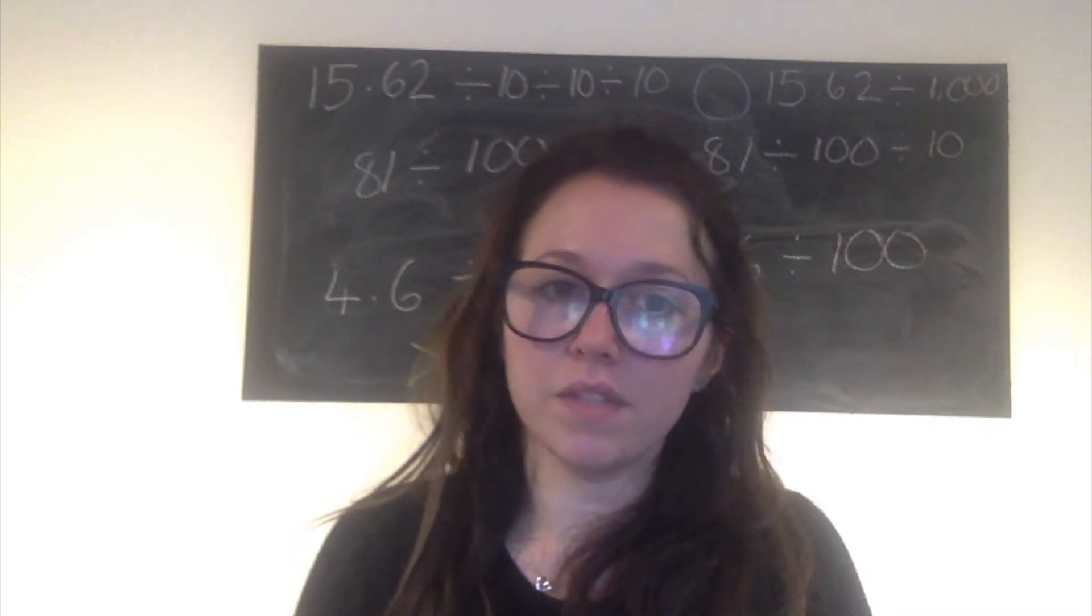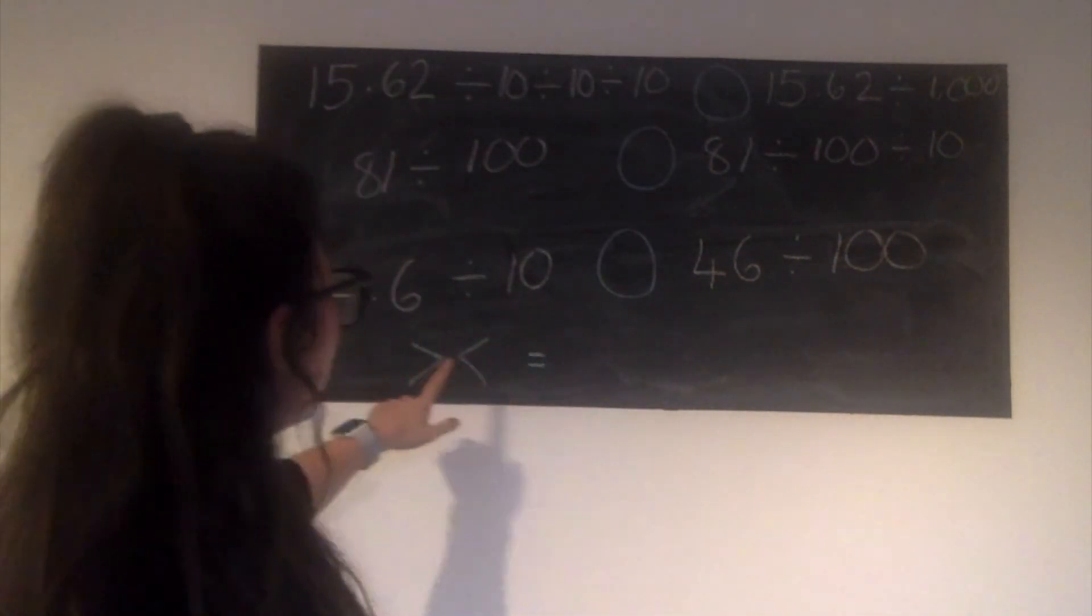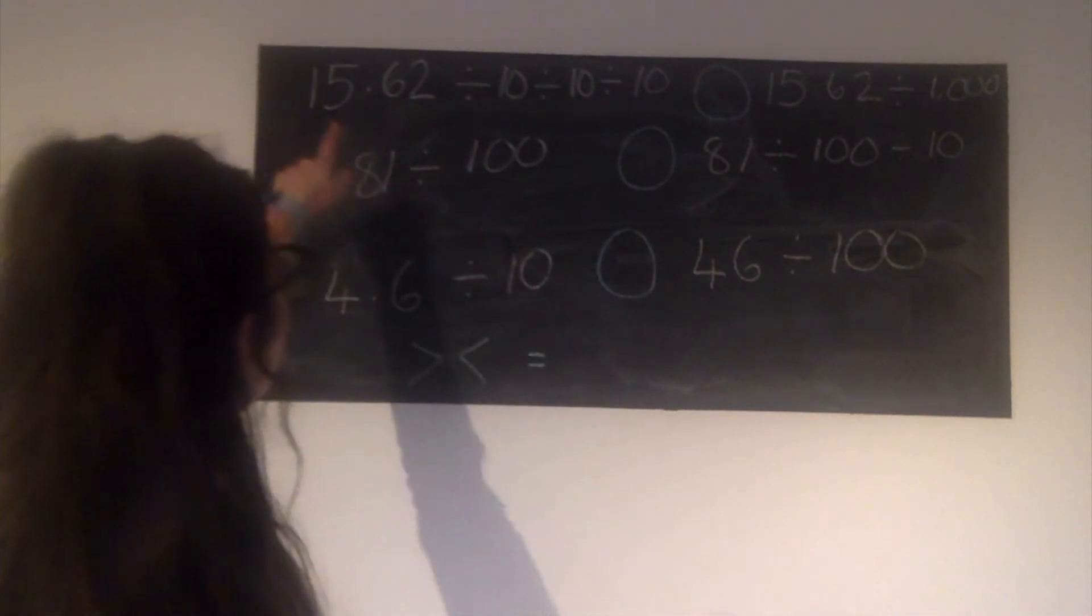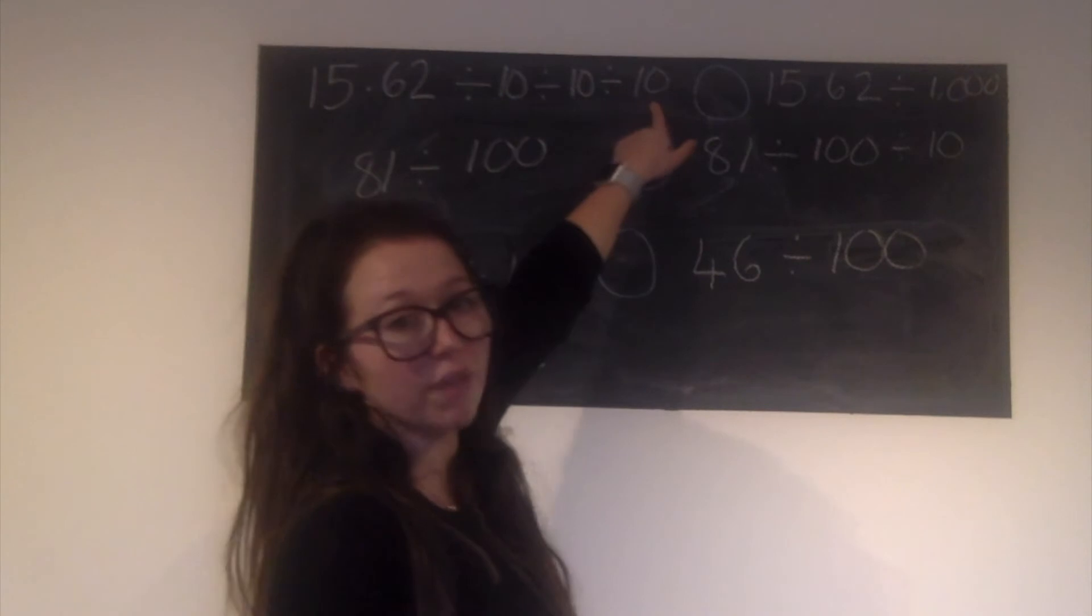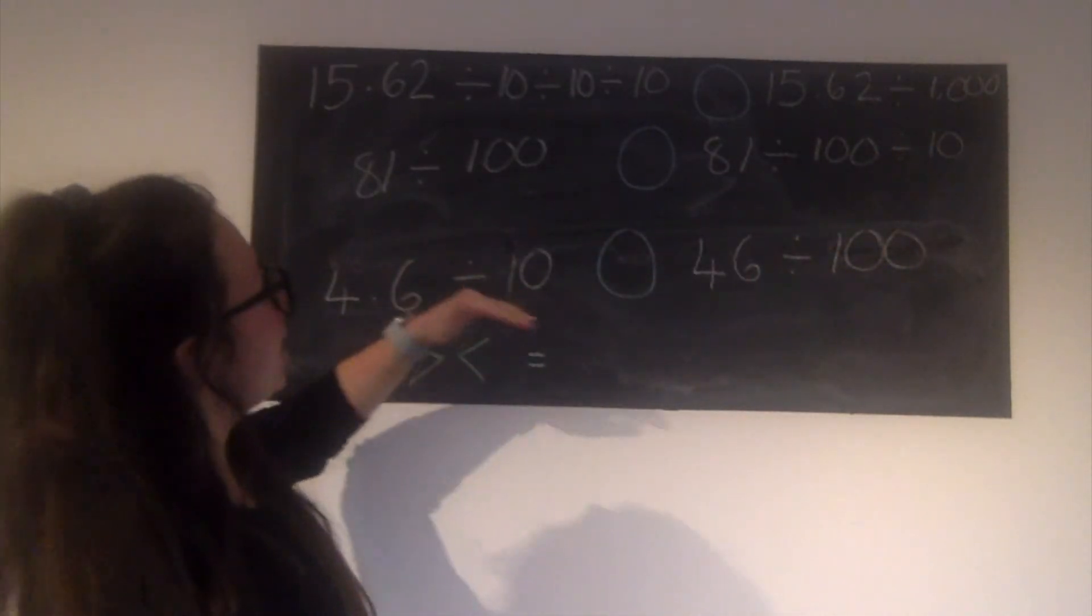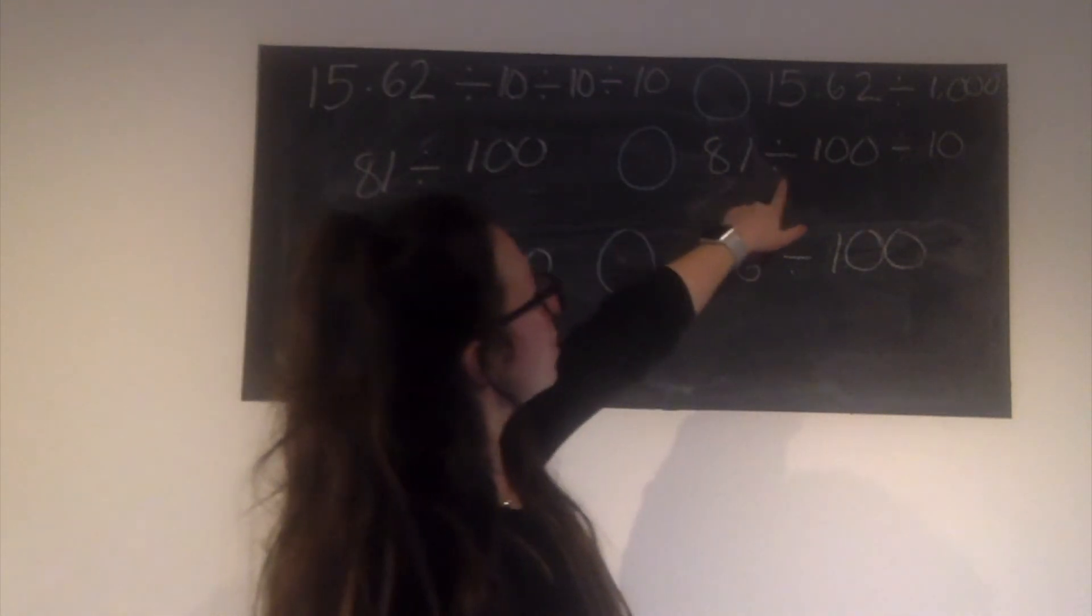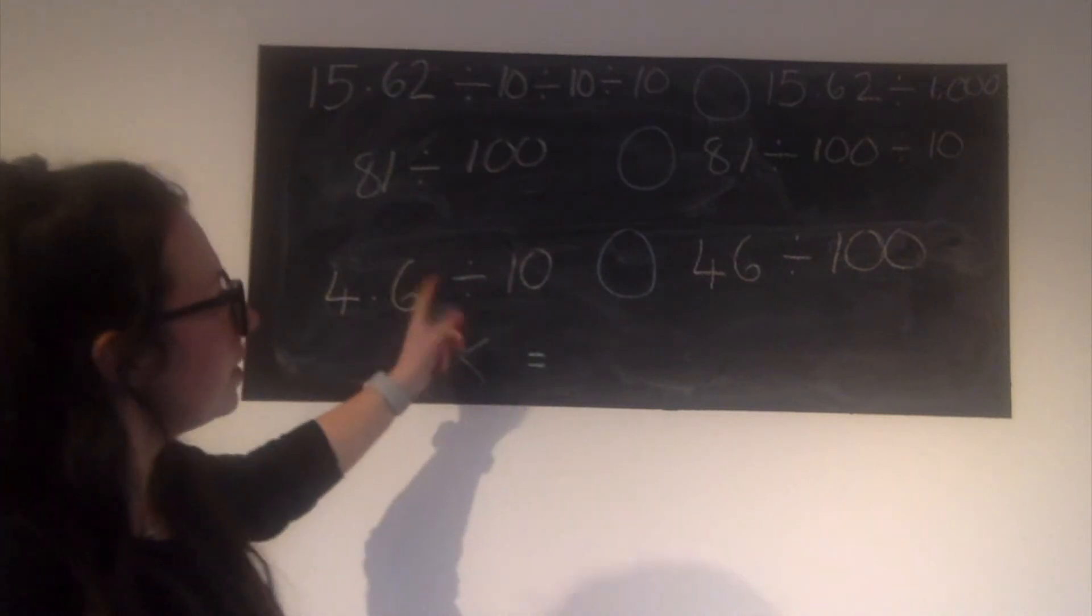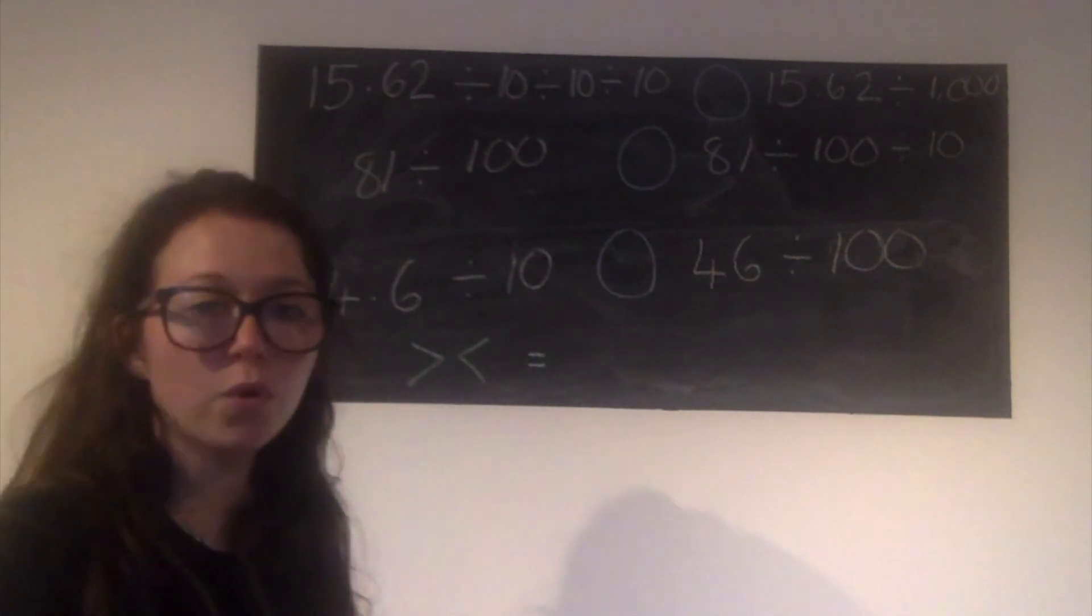Thinking about that, this is the next activity that I'd like you to do. So there are two calculations on either side and then a circle in the middle. What I'd like you to do is fill in the symbols - one symbol in each of the circles: greater than, less than, or equal to. I'll read them to you. 15.62 divided by 10, divided by 10, divided by 10. Is that greater than, less than, or equal to 15.62 divided by 1000? The next one: 81 divided by 100. Is that greater than, less than, or equal to 81 divided by 100, divided by 10? And then the last one: 4.6 divided by 10. Is that greater than, less than, or equal to 46 divided by 100? So pause the video and have a go. Perhaps write these out.